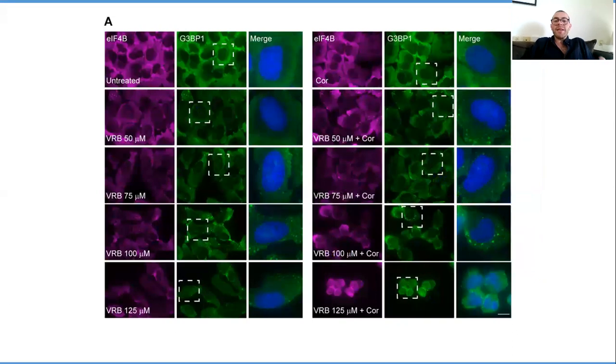What we did was we co-treated our chemotherapy with a corticosteroid, in this case cortisone, and this is something that's done fairly often. What we saw is that when we treat with very low levels of VRB, in this case 50 micromolar, we saw no stress granules in the cytoplasm.